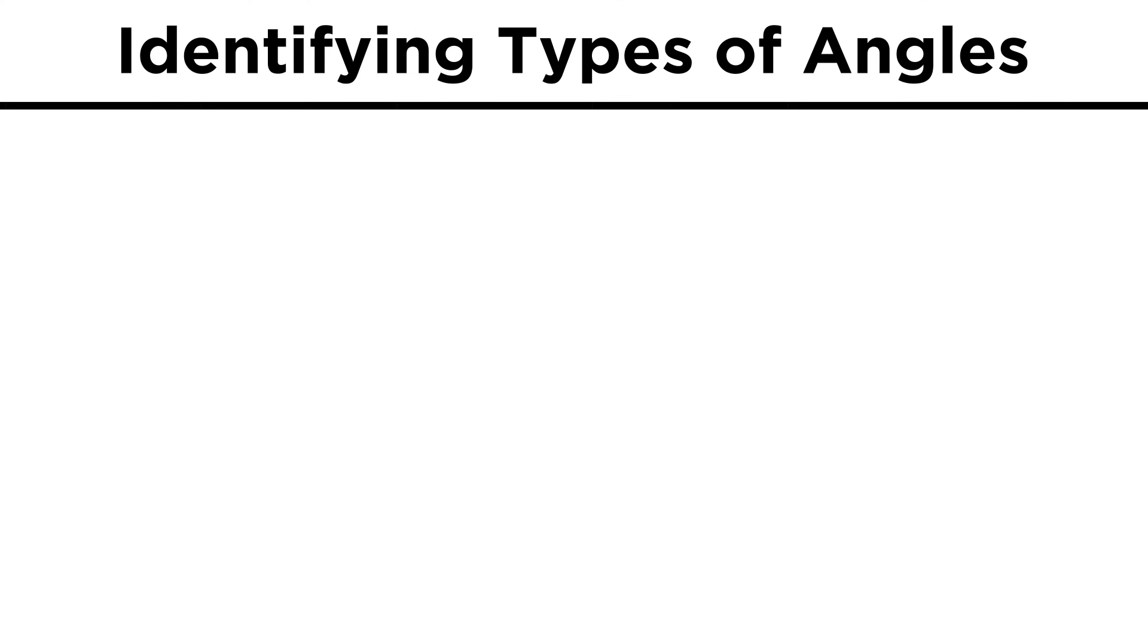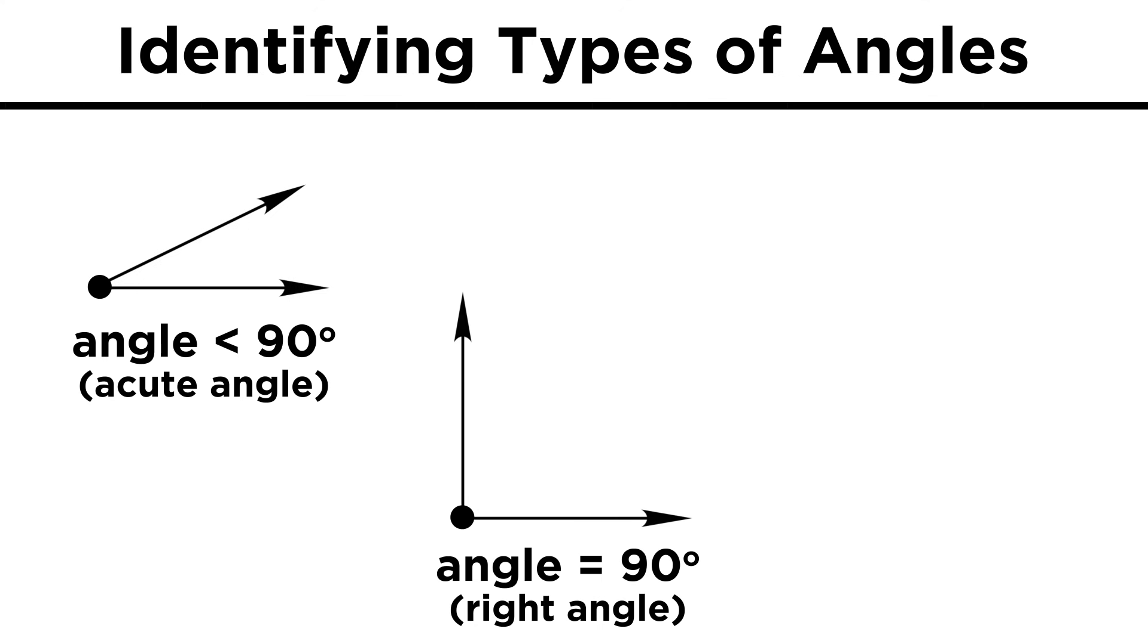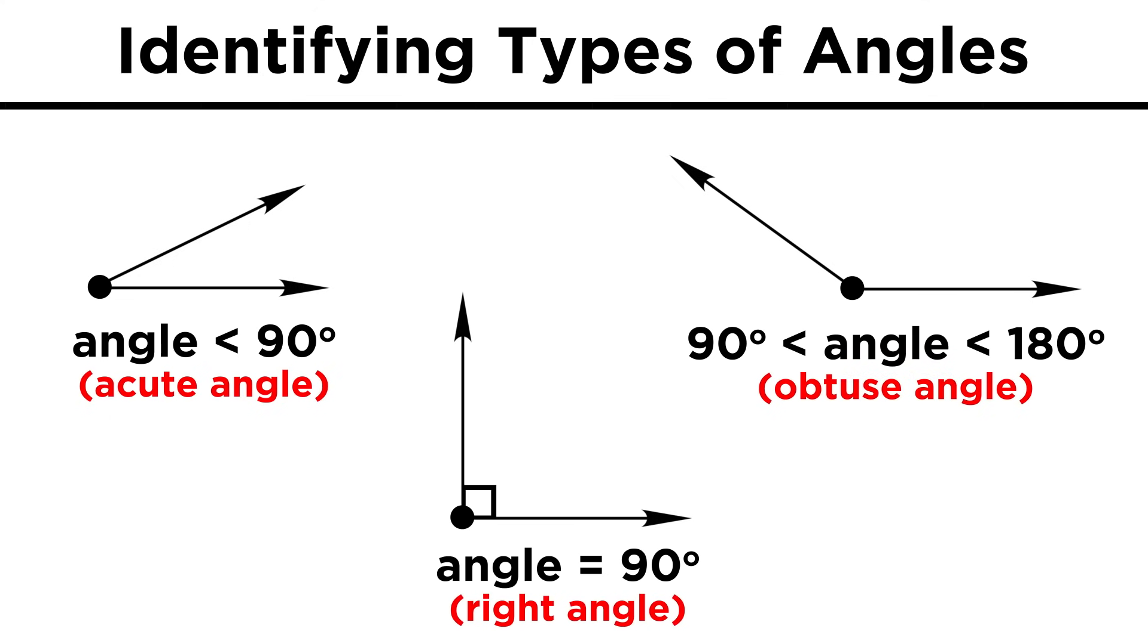Let's learn about some types of angles. If an angle is less than 90 degrees, it's called an acute angle. We can remember this because an acute angle is cute and tiny. If an angle is exactly 90 degrees, this is a right angle, and this will be denoted by a square. If the angle is between 90 and 180 degrees, this is called an obtuse angle. So we should now be able to look at any angle and label it as acute, right, or obtuse.